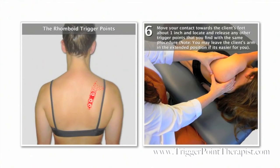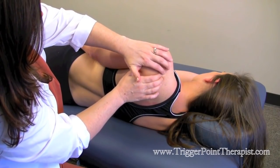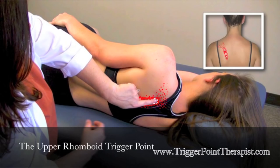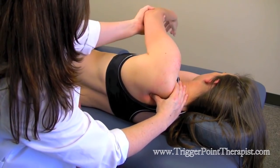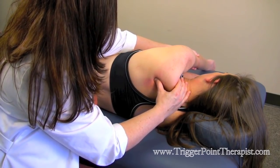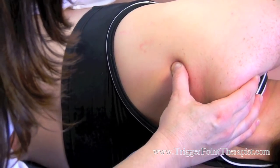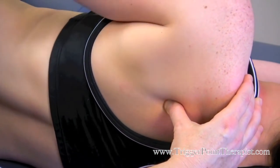Move your contact towards the client's feet about an inch and locate and release any other trigger points that you find with the same procedure. You may leave the client's arm in the extended position if it's easier for you. With the client in the side-lying position, palpate the spine of the scapula to the medial edge — the upper rhomboid trigger point lies just off the medial edge of the spine of the scapula. Apply thumb pressure here as you bring the client's arm forward, all the way forward and hold, then release. Bring the client's arm back up and follow the edge of the scapula all the way across, then bring the arm back to neutral and repeat this entire procedure four times.